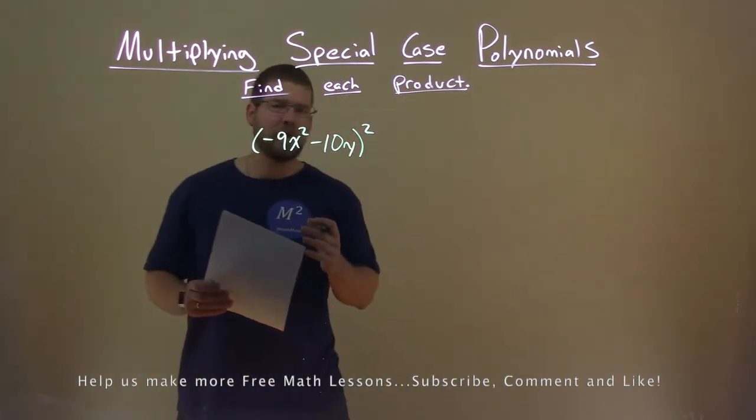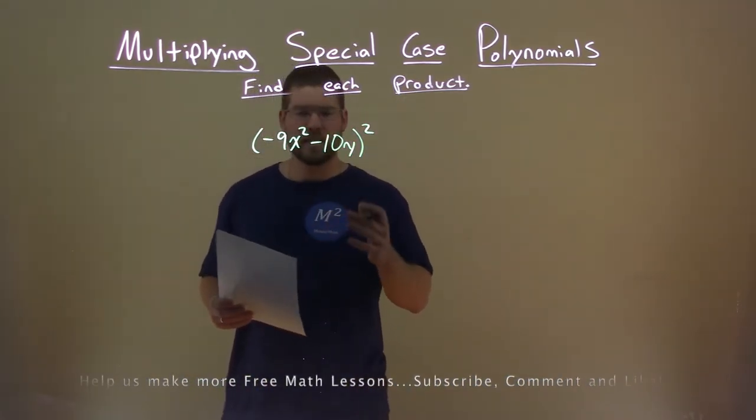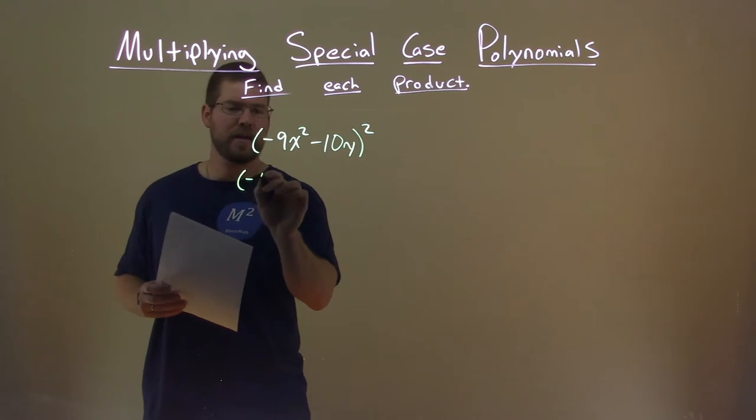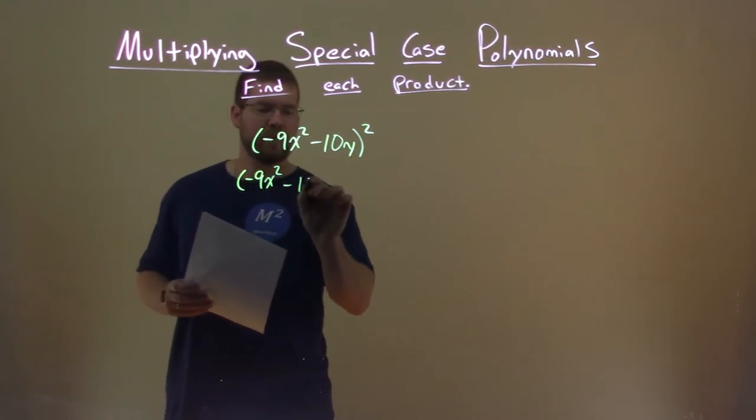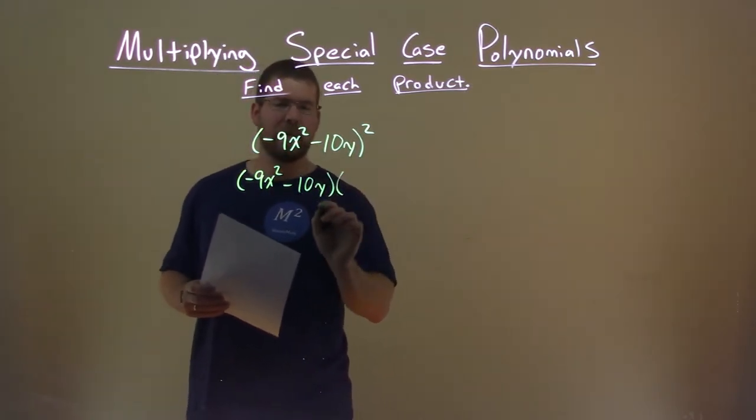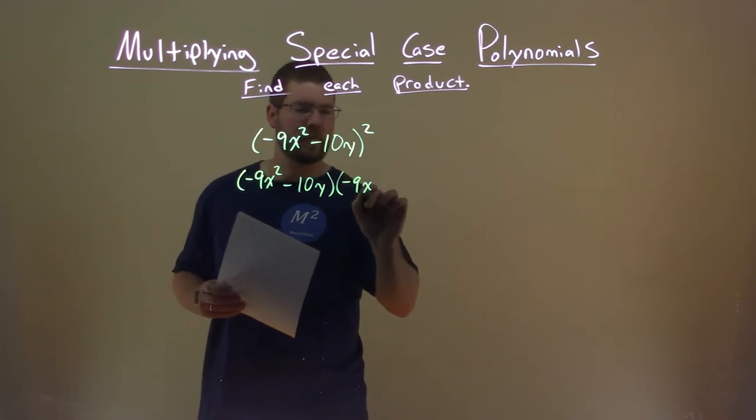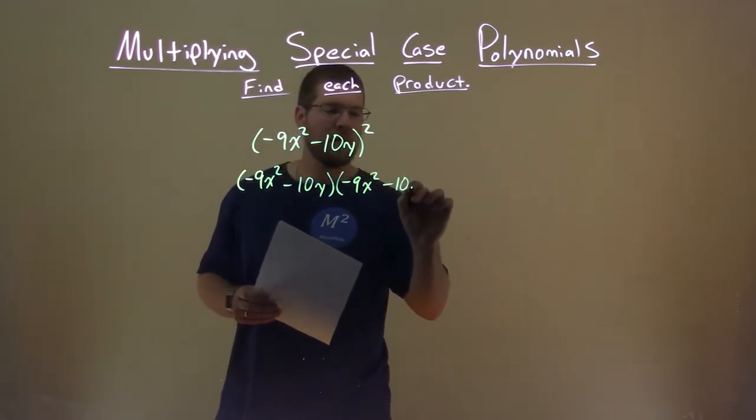By squaring something, it's the same thing as multiplying it by itself. So we take negative 9x squared minus 10y, multiply it by itself, negative 9x squared minus 10y.